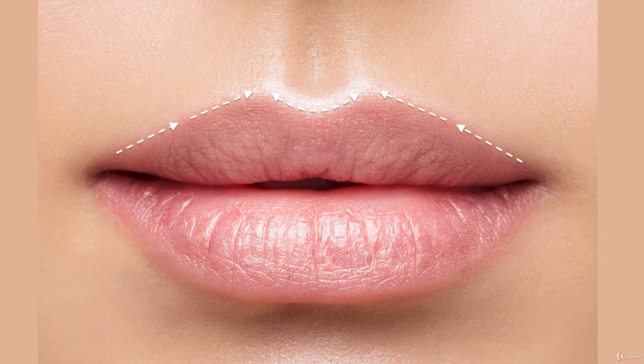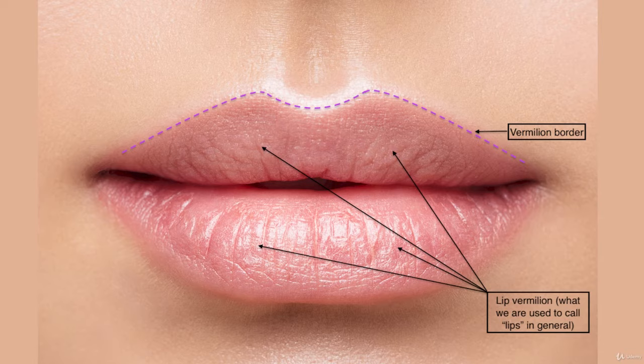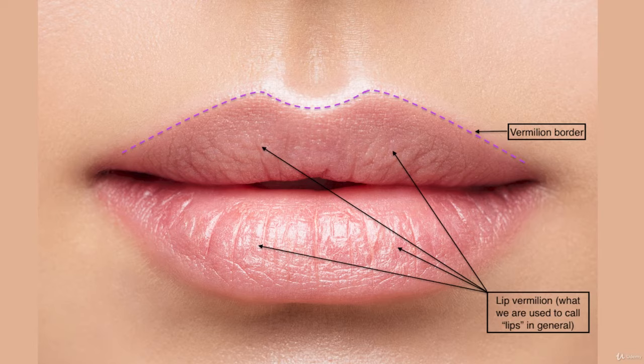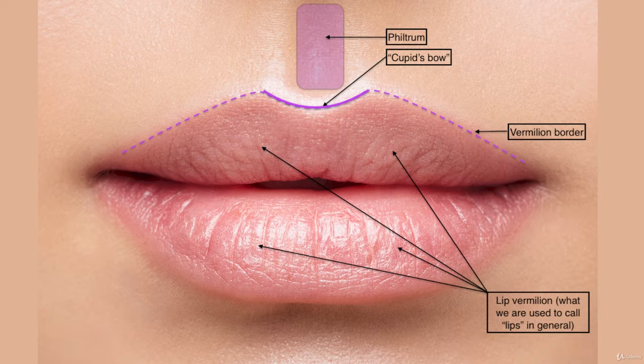First, we need to learn the anatomy of lips. This is called the vermilion border. When people say the word lips, they imagine the vermilion. The lip is the whole structure; the red part is called the vermilion. This is the border where the vermilion joins with the skin, or simply the upper border of the vermilion. The area between the nose and the cupid's bow — and the cupid's bow is the center portion of the vermilion border — is called the philtrum.